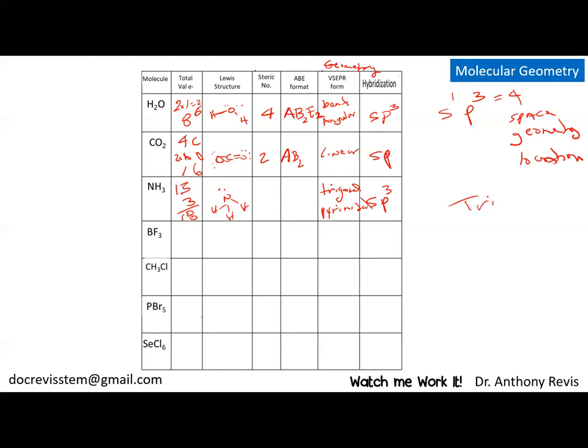So trigonal pyramidal. I told you, this is watch me do it, you see it all. Around this, we have four steric groups, around one, two, three hydrogens and a lone pair. The geometry: A for the central atom, it's always A, B—how many groups do they have around it on the elements? Three. And how many lone pairs? One.